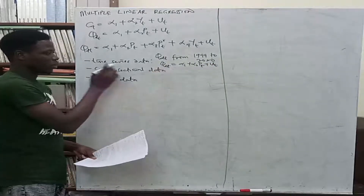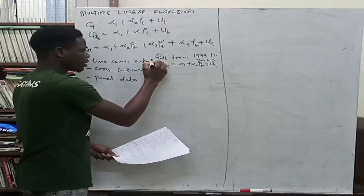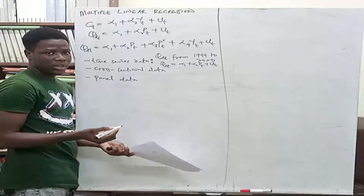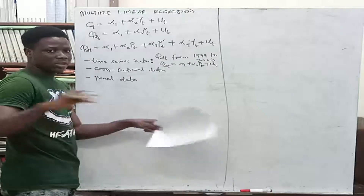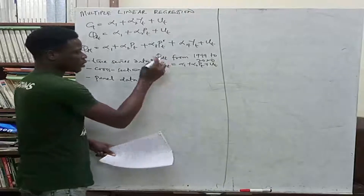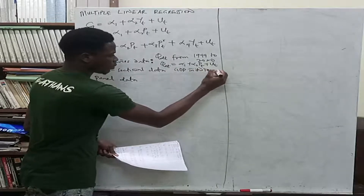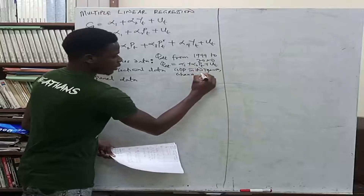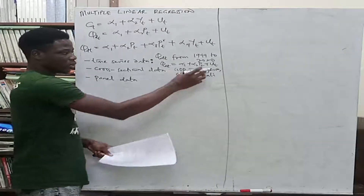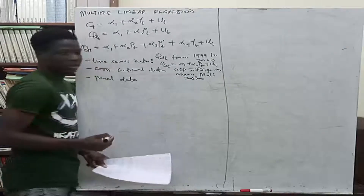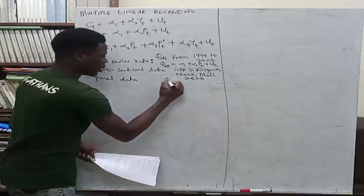Cross-sectional data is collected on a single variable or multiple variables at a single point in time across different units. For example, looking at GDP in Nigeria, Ghana, and Mali all for the year 2020 — that is a single point in time. Cross-sectional data comes with a subscript i.